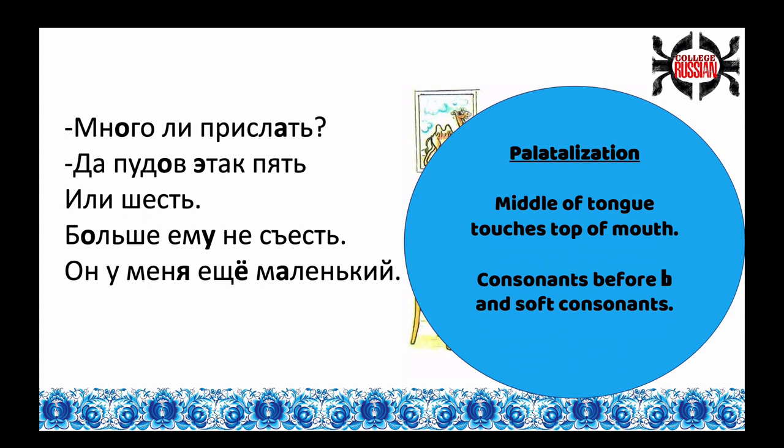Now in this slide, we're going to be looking at palatalization. Palatalization is when the middle of the tongue kind of squishes up against the top of the mouth while the tip of the tongue is also making the other sound. For example, if you make an L, the tip of your tongue is on the back of your teeth. In addition to that, the middle of your tongue is squishing up to the top of your mouth.